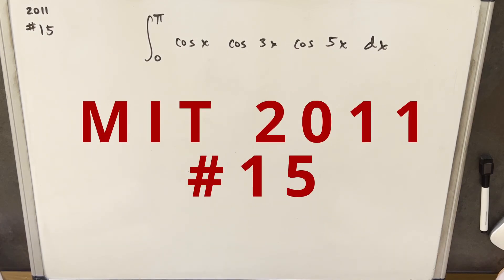Hey, we've got here another integral from the MIT Integration Bee. We've got something from 2011. We have an integral from 0 to pi, cos x, cos 3x, cos 5x, dx.